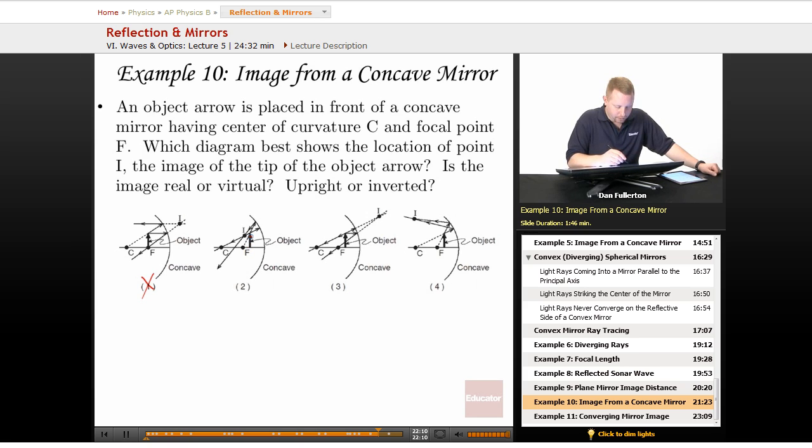That can't work. Number three, we've got the line parallel to the principal axis from the image, goes through the focal point. That works. We also have the line through the center of curvature in the object going back through the center of curvature. That works.